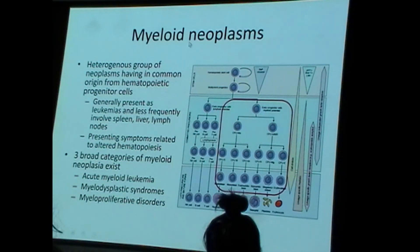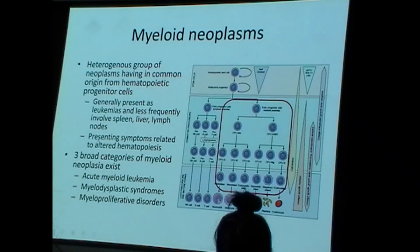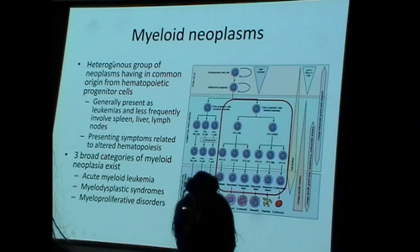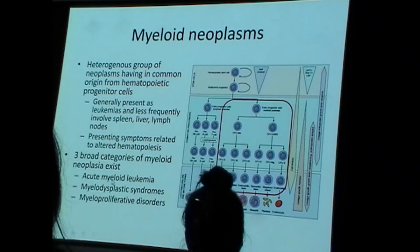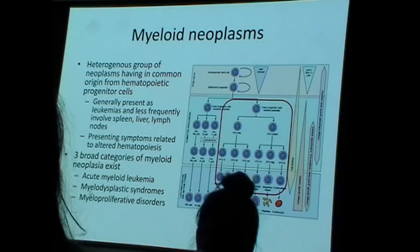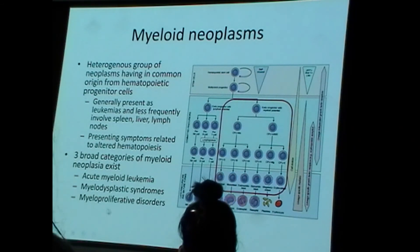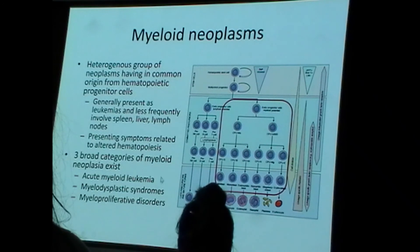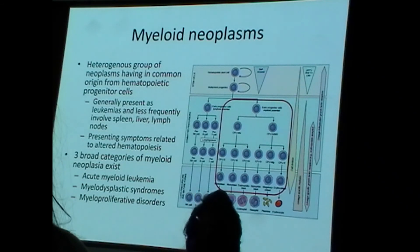Let's learn next about myeloid neoplasms. Myeloid neoplasms generally present as leukemia with symptoms related to abnormal hematopoiesis. Myeloid neoplasms come in three players: acute myeloid leukemia or AML, and then myelodysplastic syndromes and myeloproliferative disorders. These are precursor lesions to AML — the significance is that an individual with a myelodysplastic syndrome or myeloproliferative disorder is at increased risk of developing AML.